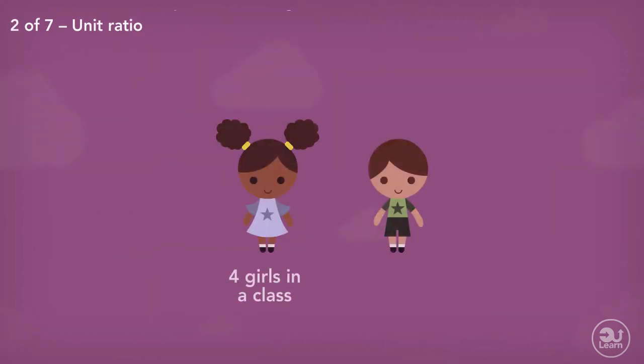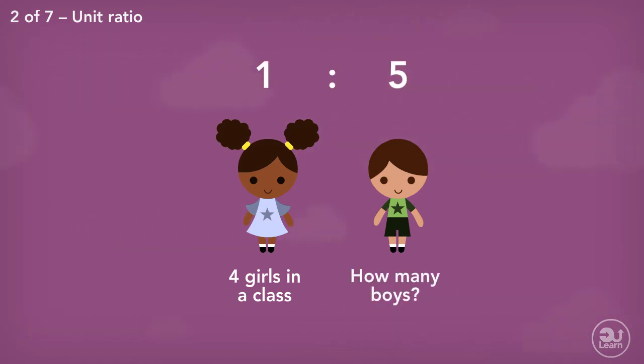Let's say there are four girls in a class. The ratio of girls to boys is one to five. How many boys are in the class?